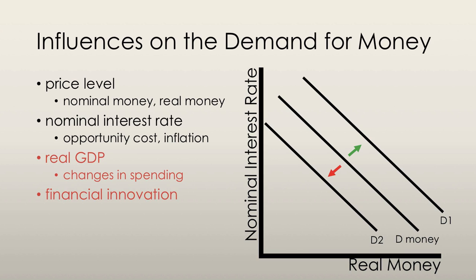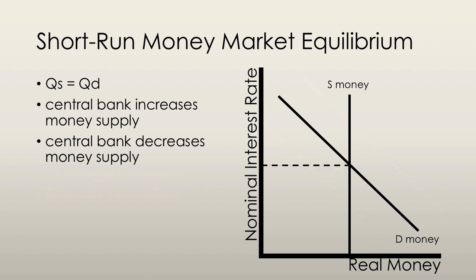If real GDP increases, then the demand for money will increase, but if it decreases, then the demand for money will decrease. Short-run money market equilibrium occurs when the quantity of money supplied equals the quantity of money demanded. In short-run equilibrium, the central bank uses open market operations and this determines the money supply curve. The intersection of the money supply and money demand curves determines the interest rate.